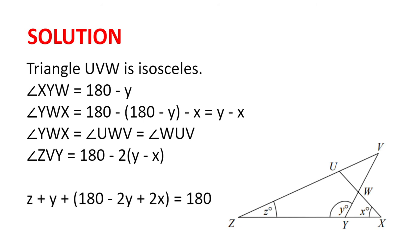And because angles sum to 180, Z plus Y plus (180 minus 2Y plus 2X) equals 180. This gives 2X equals Y minus Z, or X is (Y minus Z) divided by 2. We check the answers and find that this is letter E.